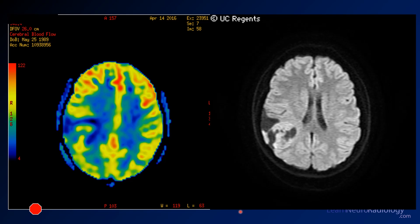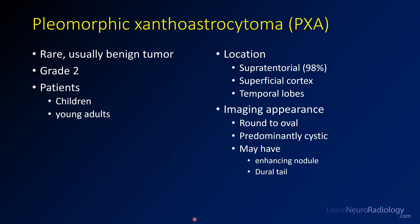DSC perfusion shows relative hyperperfusion centrally — not super hyperperfused, but just a little — suggesting it's not too cellular but relatively hyperperfused. This is a pleomorphic xanthroastrocytoma, or PXA. These are rare, usually benign grade 2 tumors that tend to occur in children and young adults. Most commonly they are supratentorial, involving the superficial cortex, particularly in the temporal lobes. They tend to be round to oval, have cystic components, and characteristically may show a dural tail, as well as a prominent enhancing nodule.